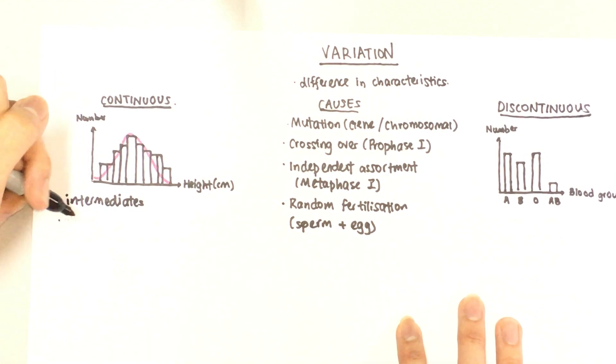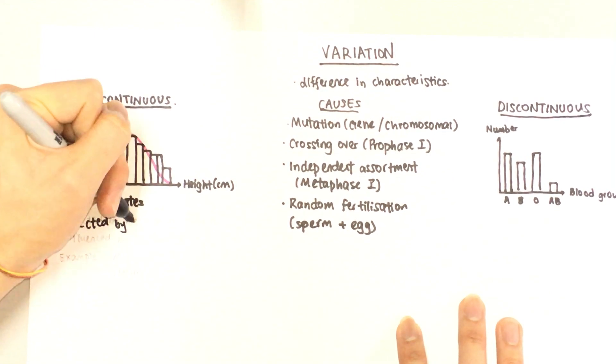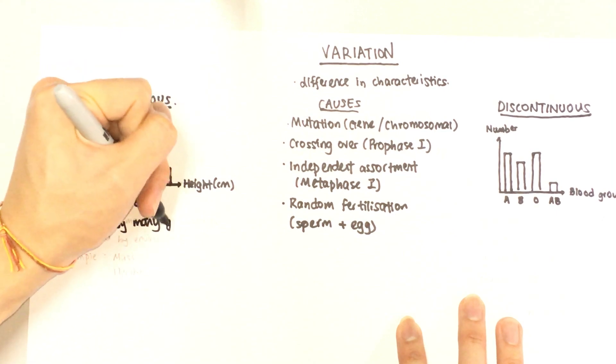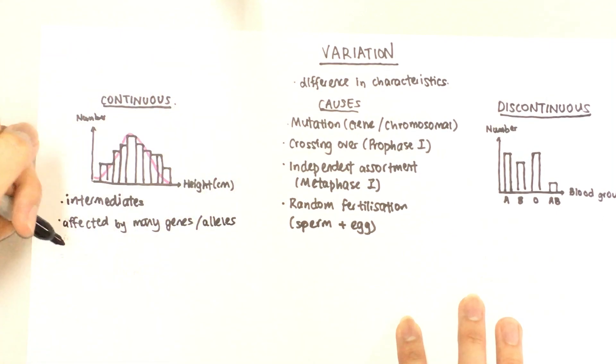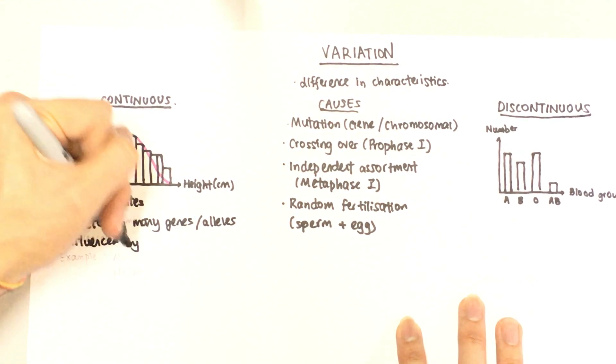Continuous variation, the characteristics are affected by many genes or many alleles, and it's also influenced by environmental factors.